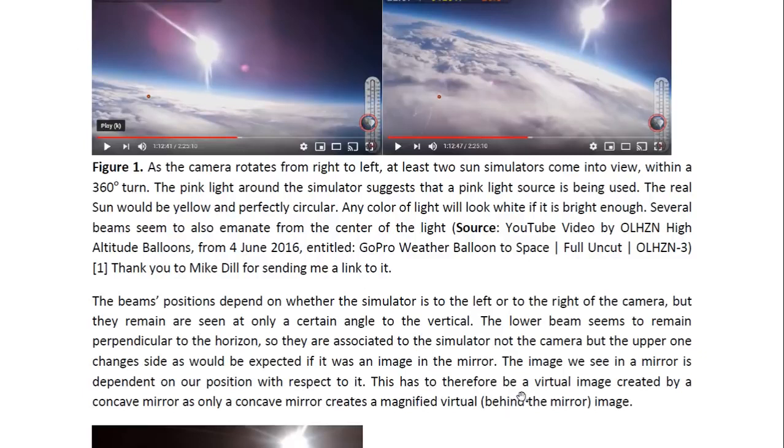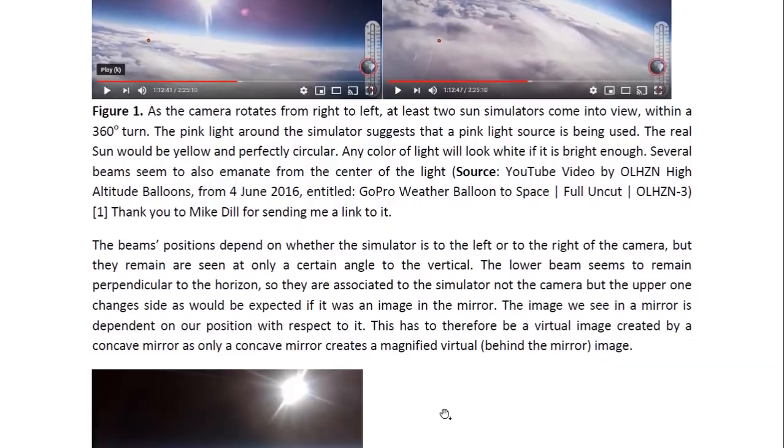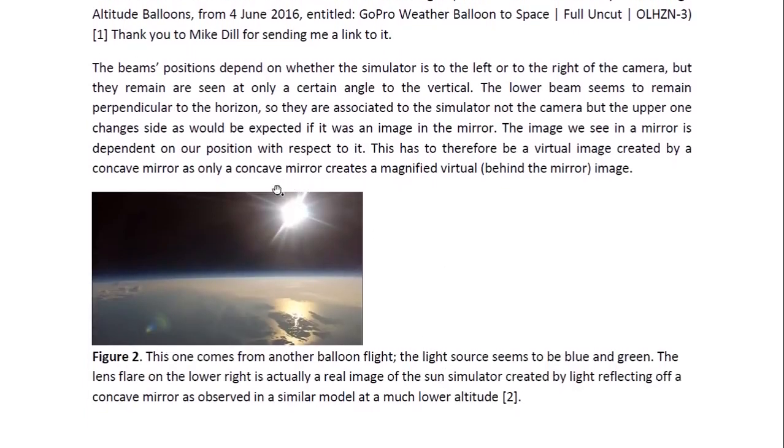So this has to be a virtual image created by a concave mirror. Only a concave mirror creates a magnified virtual image. That means that the image is behind the mirror. And this is what we see when we look at ourselves in a mirror. We see ourselves behind the mirror. So it's a virtual image. So in this case, it's a virtual image, but only a concave mirror can produce a magnified virtual image where the object in the mirror will look much larger than it actually is.